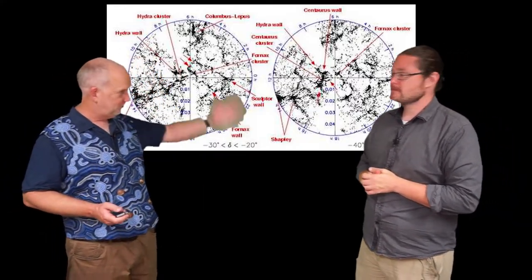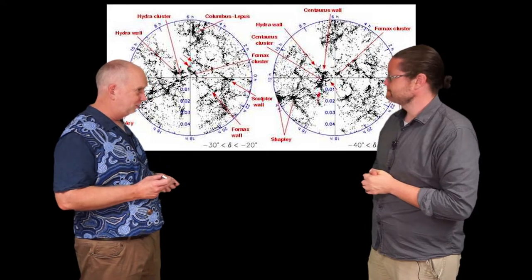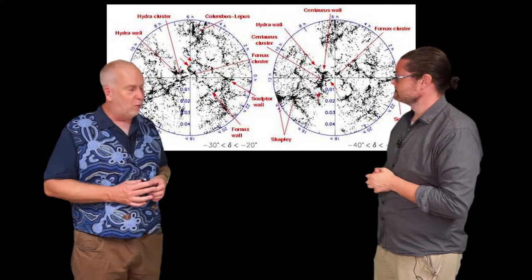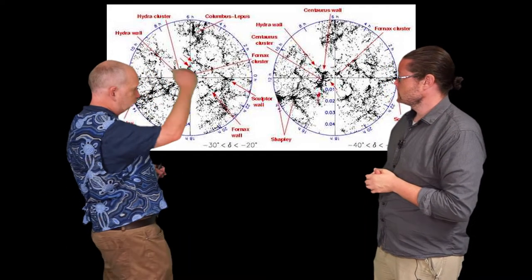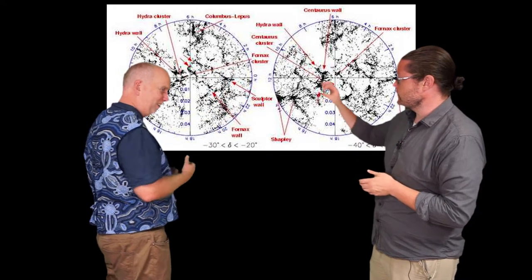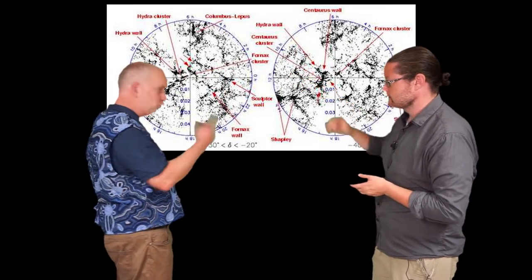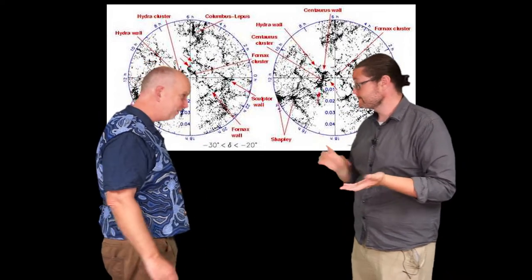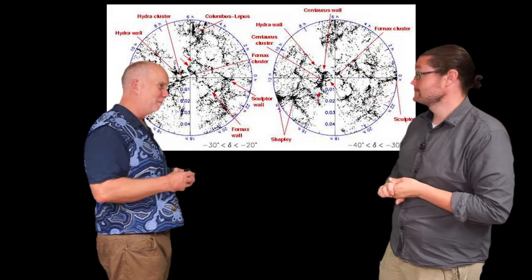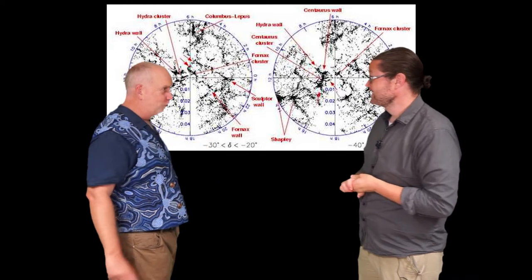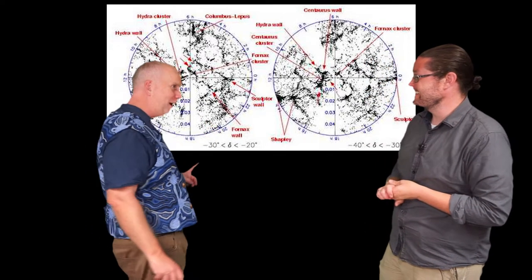Here's a slice done with an Australian survey, the 2dF Galaxy Redshift Survey. And what you can see is there are like strings of galaxies and walls of galaxies. So each dot here is a galaxy? Yes, so each dot is probably a disk or an elliptical galaxy. So we're now much different scale, only a few minutes ago each dot was a star, now we're looking at each dot as a galaxy.